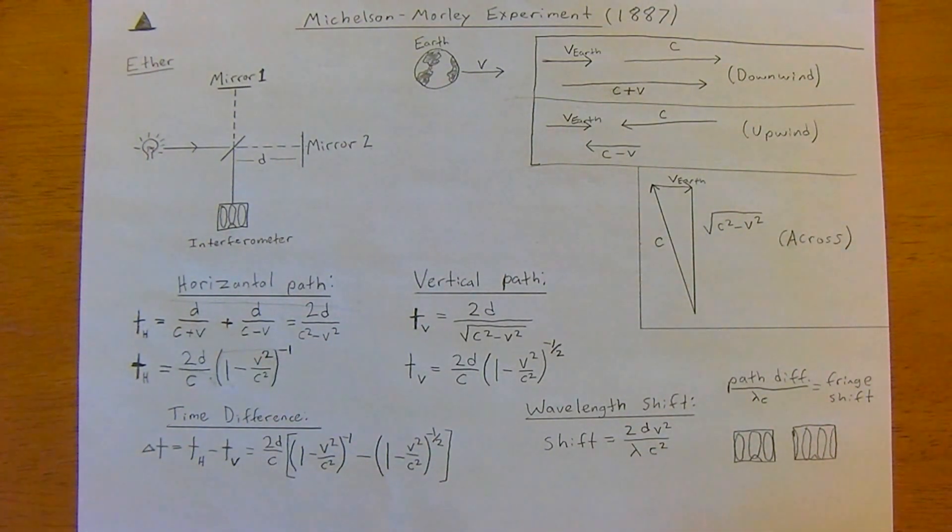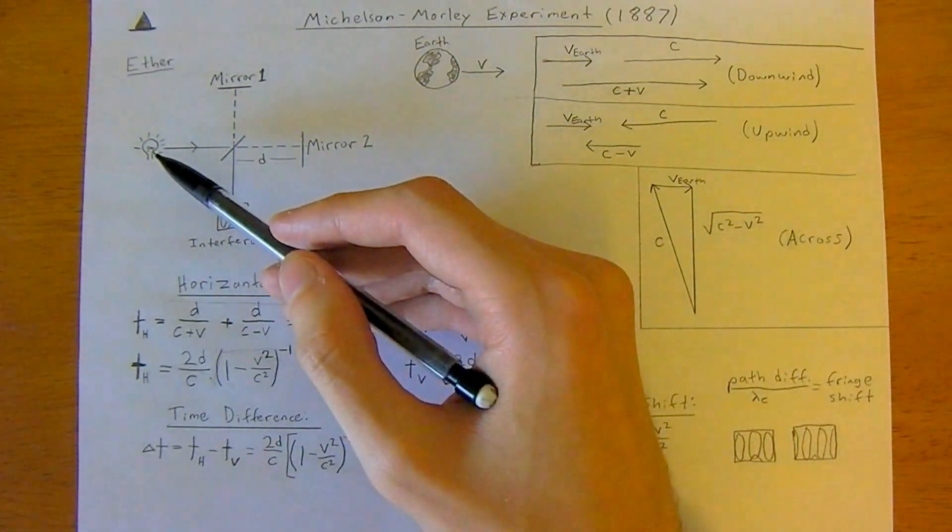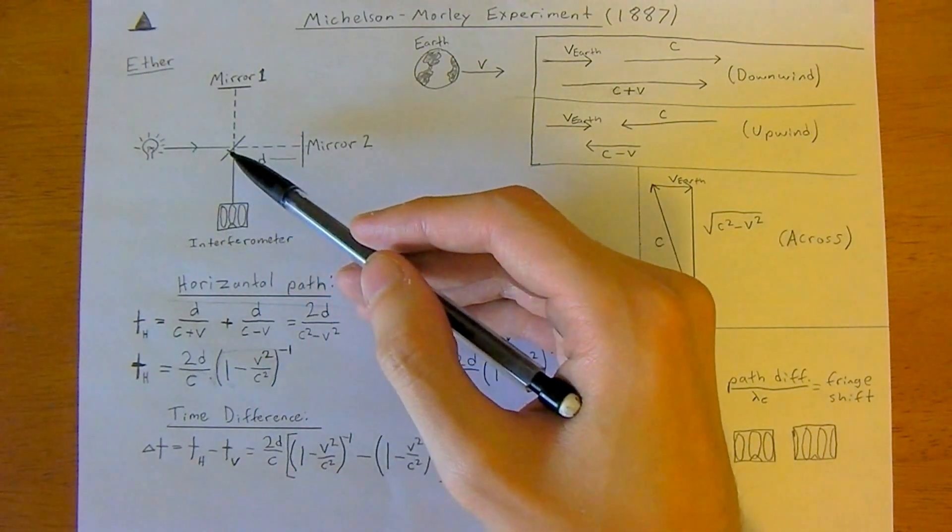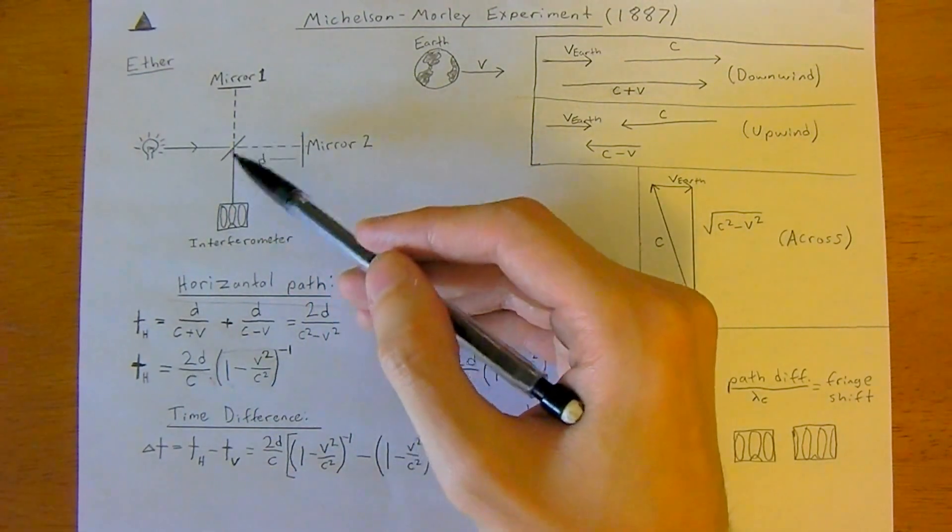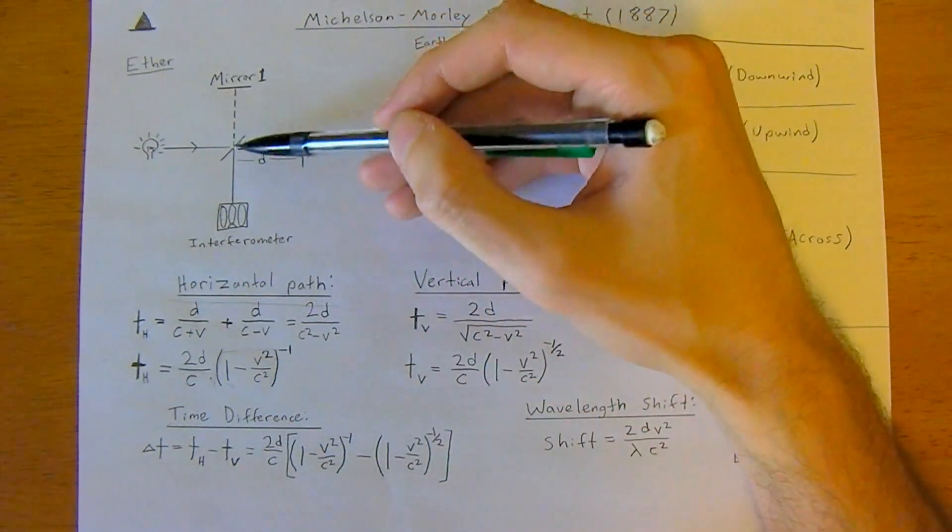Nonetheless, it has a lot of interesting concepts and it's a very interesting idea. In its essence, here is a diagram of what they set up. They had a light source that shot out a light beam, and then it impacted a mirror.